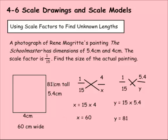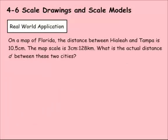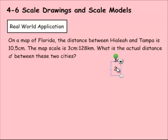You can find the actual size from the scale factor — remember the model or photo goes on top and the actual size goes on the bottom. Now let's use maps. On a map of Florida, the distance between Hialeah and Tampa is 10.5 centimeters. The map scale is 3 centimeters to 128 kilometers. What is the actual distance d between these two cities? If the colon notation confuses you, just change it into a fraction: 3 centimeters over 128 kilometers. The map goes on top and the actual distance on the bottom.